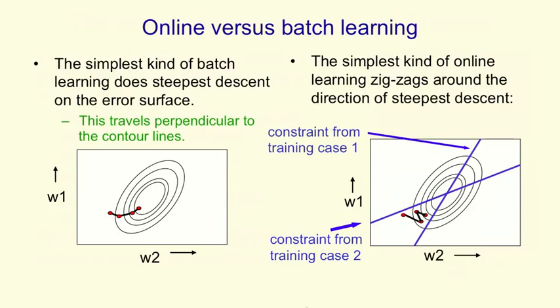That's what happens with what's called batch learning, where we get the gradient summed over all training cases. But we could also do online learning, where after each training case, we change the weights in proportion to the gradient for that single training case. That's much more like what we do in perceptrons.